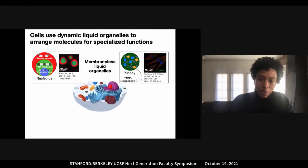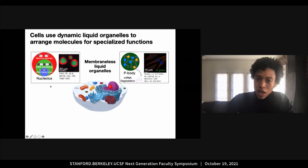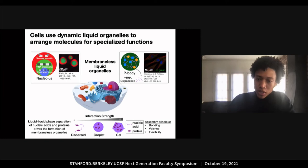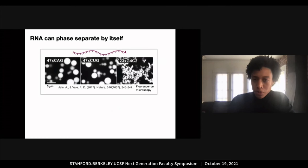Observing biology, we see that cells spatially and temporally organize molecules using dynamic membrane-less liquid organelles. Some examples of these are the nucleolus, located inside of the nucleus, in which there's a set of nested condensates responsible for ribosome biogenesis, as well as P-bodies located in the cytoplasm, responsible for mRNA metabolism. These liquid droplets are formed by the phase separation of nucleic acids and proteins, and the fluidity of these compartments is tuned by interaction strength, which is governed by bonding, valence, and flexibility.